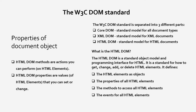Core DOM is a standard model for all document types, XML DOM is a standard model for XML documents, and HTML DOM is a standard model for HTML documents. HTML DOM defines HTML elements as objects, properties of all HTML elements, methods to access all HTML elements, and events for all HTML elements. Methods are actions you can perform on HTML elements; properties are values of HTML elements that we can set or change.